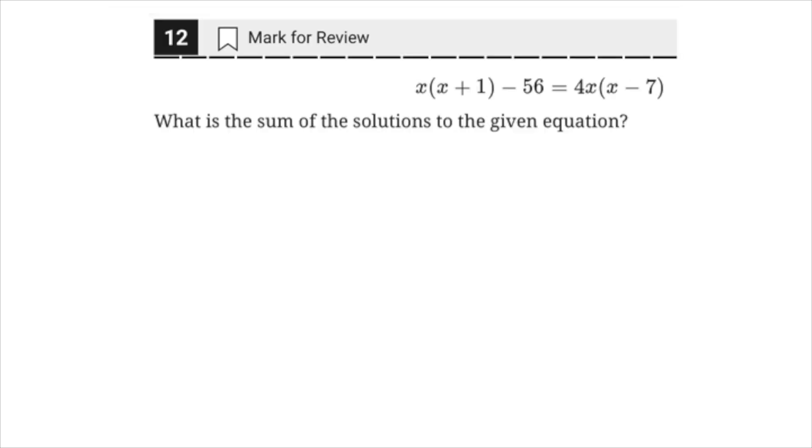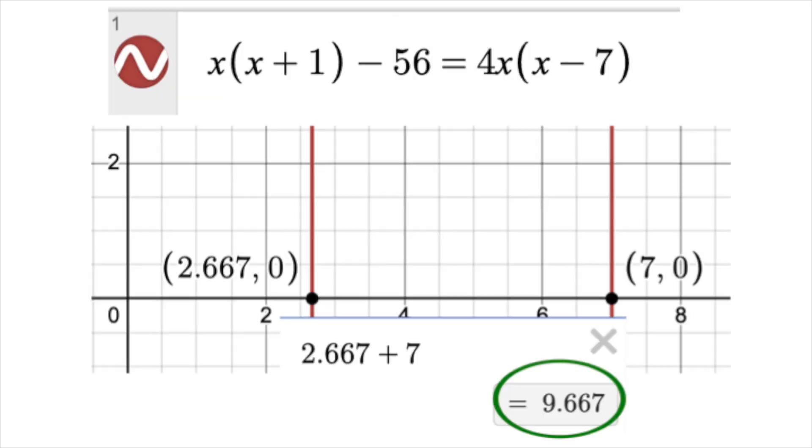The question asks for the sum of the solutions, so add the solutions to get your answer. 9.6 repeating, you could grid that as 9.667 or 29 thirds.